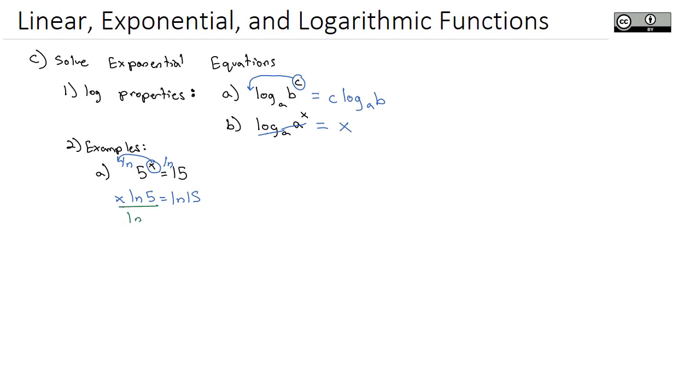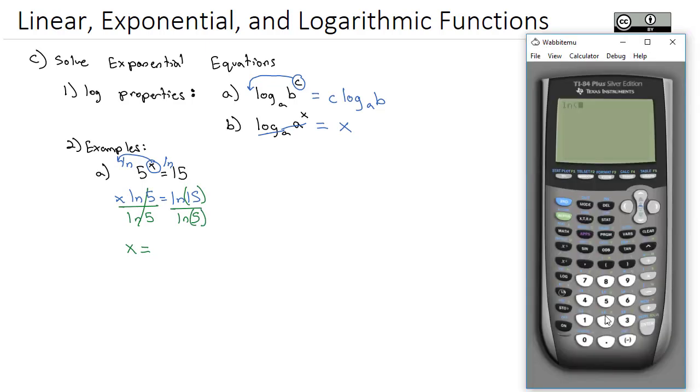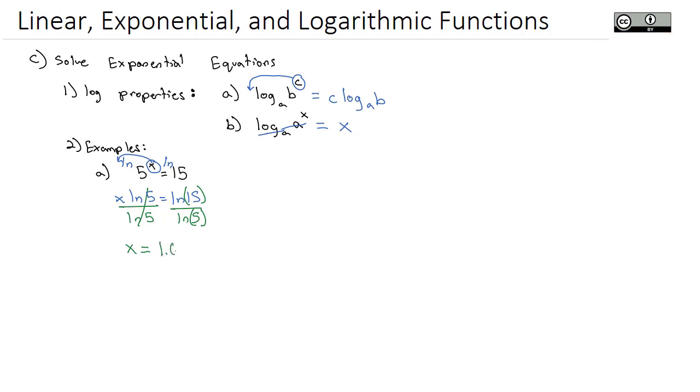To get x alone, I'll divide both sides by the natural log of 5. And x is equal to, I just have to do on my calculator, the natural log of 15 divided by the natural log of 5. As I do that, I need to remember to put those natural logs in parentheses. Natural log of 15, close the parentheses, divided by the natural log of 5, close the parentheses, and I get 1.68 is equal to my x.